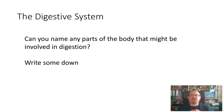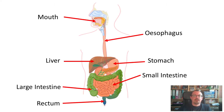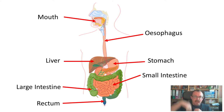There are lots of different parts inside your body that have the job of digesting your food. Together we give this a name and we call it the digestive system. Can you think of any names of parts of your body that might be involved in digesting your food? Can you write some names down? If you can imagine there's one long tube that starts in your mouth and ends up in your bottom, and the food travels all the way through there.